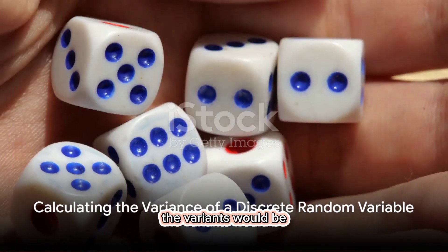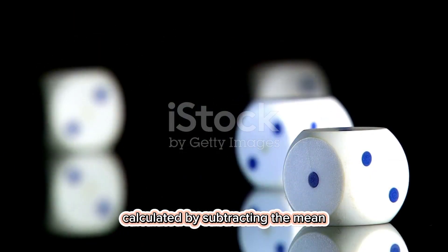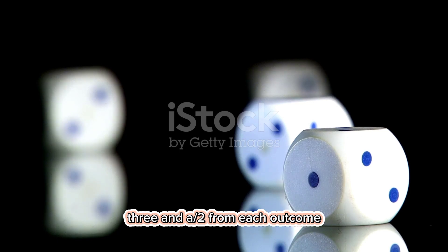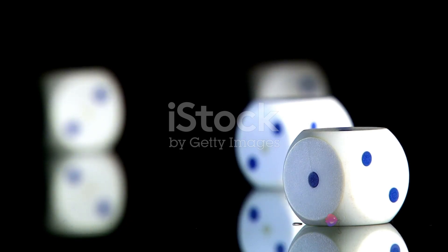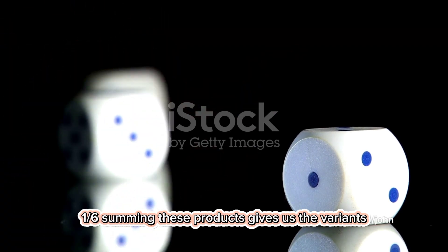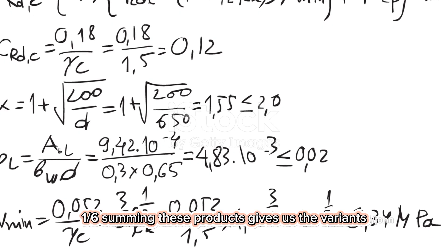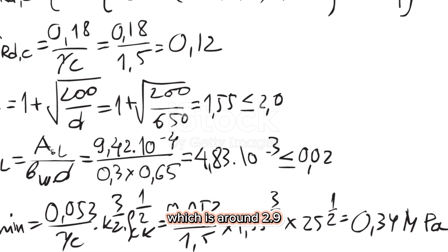In our dice roll example, the variance would be calculated by subtracting the mean, three and a half, from each outcome, squaring the result, and then multiplying by the probability of each outcome, one-sixth. Summing these products gives us the variance, which is around 2.9.